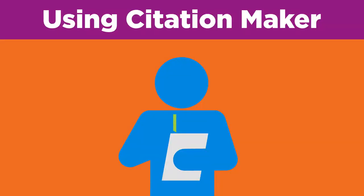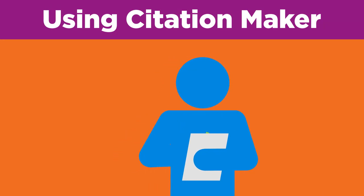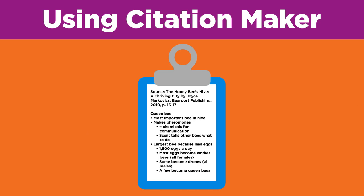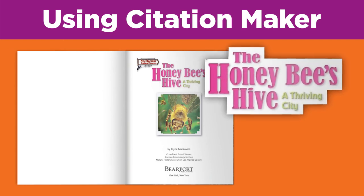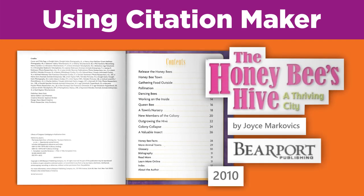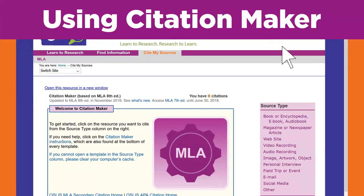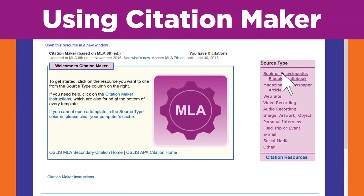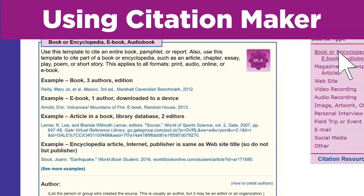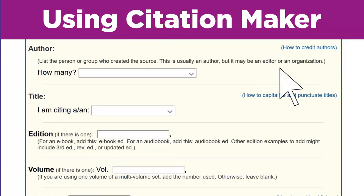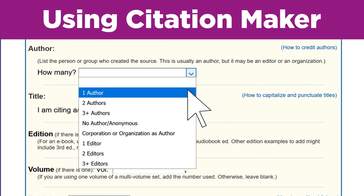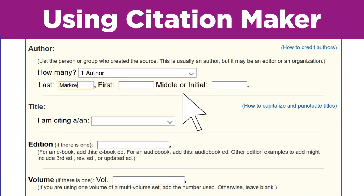I wrote down all the information I think I'll need about each source I used, but I have my sources right here, just in case I forgot something. My first source is the book, The Honey Bee's Hive, and besides the title, I know I'll need the author, publisher, and publication date. Since this source is a book, I'll click on the book option in the purple source type column. There are a few examples at the top of the screen and even a link to more examples. That's helpful. First, Citation Maker asks for how many authors. My book has just one — last name, Markovics, first name, Joyce. There's no middle name listed, so I'll just leave that box blank. Better make sure I spell her name correctly.